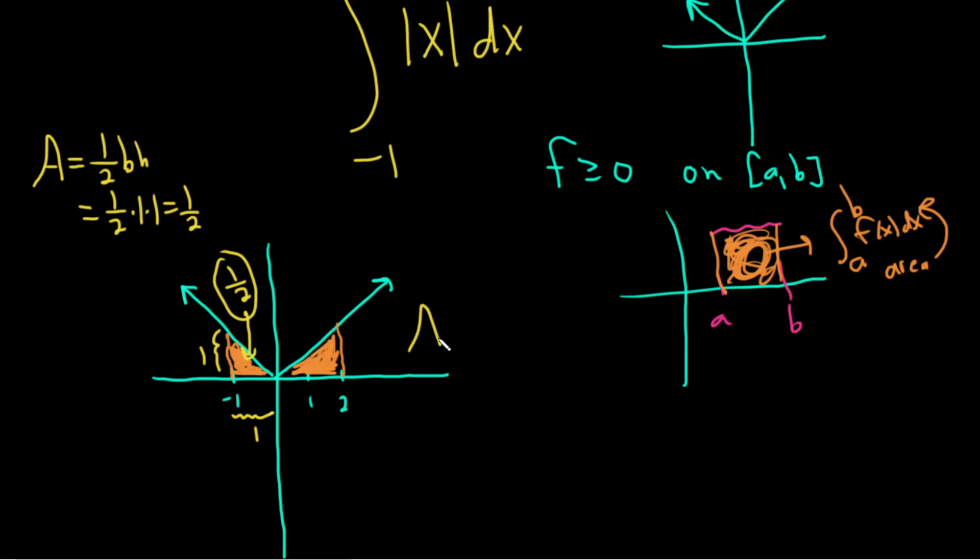Over here, we have to do the same thing. So we'll use the formula again: one-half base times height. So this time, the base is two. So it's one-half times two. And then the height is different here as well—you've got to be careful. The height here is two, because this is the absolute value of x.